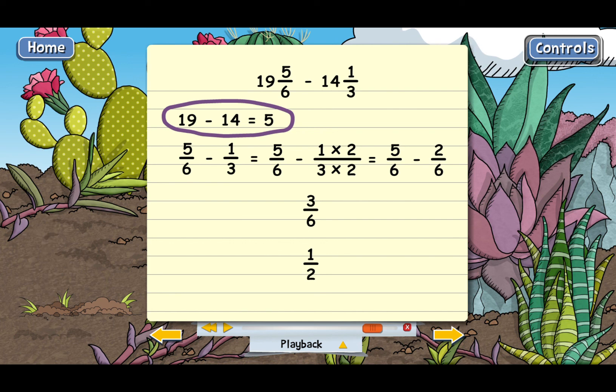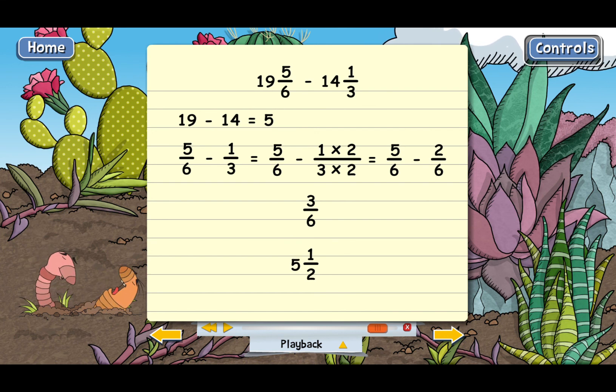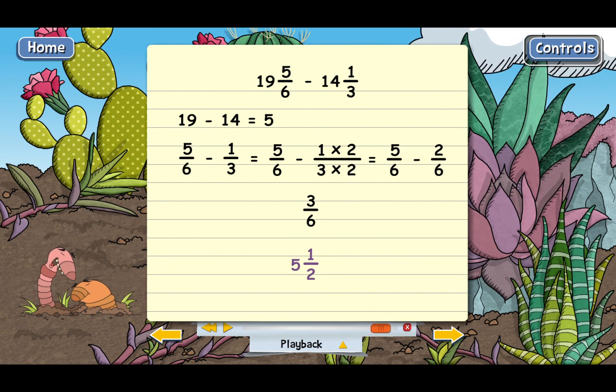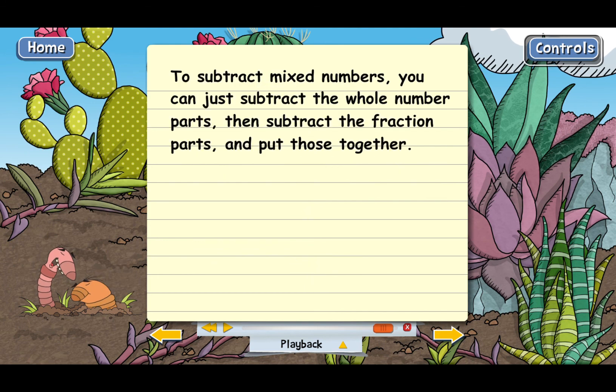And we subtracted the whole number parts already. Remember, that was 19 minus 14, which came out to five. And so the last step is to put those together to make a new mixed number. We end up with five and one half. That's how many gallons of honey Mrs. Gargantua has now. And the main point of the example is that to subtract mixed numbers, you can just subtract the whole number parts, then subtract the fraction parts and put those together.